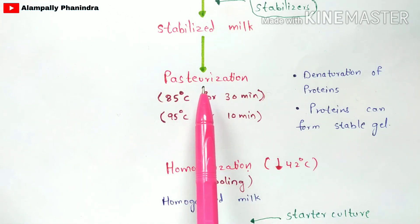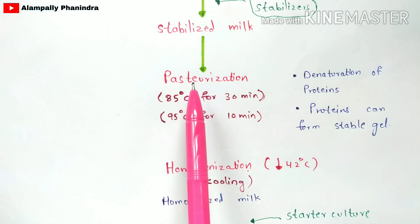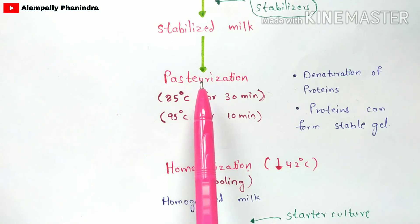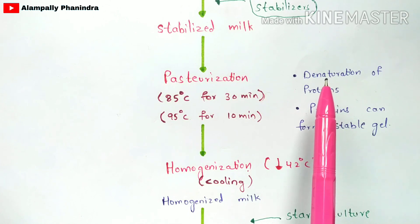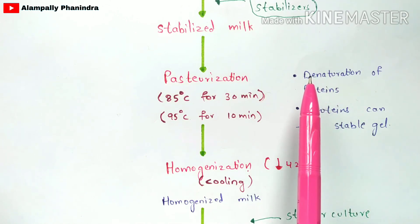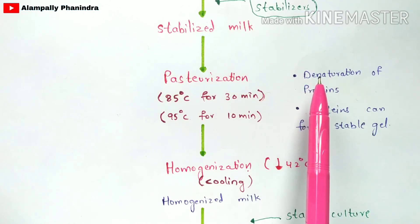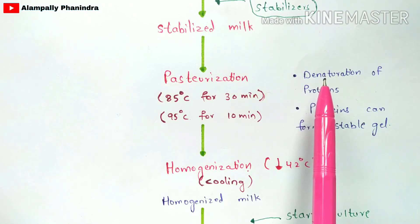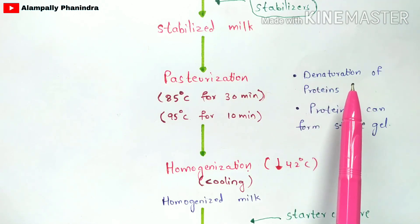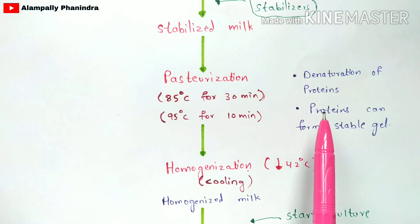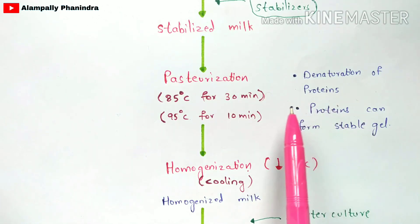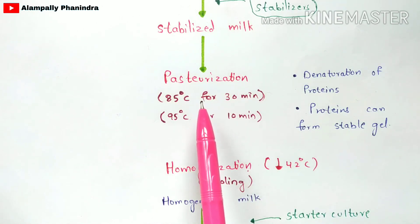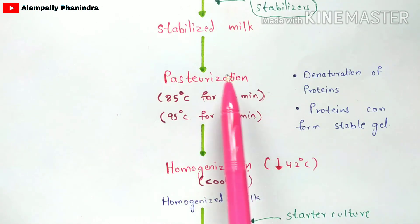The main reasons for pasteurization are: first, to kill the harmful microorganisms; second, denaturation of proteins — where proteins in water and air structures are denatured to form primary or secondary structures; and third, the proteins can form a stable gel-like structure once pasteurization is complete.